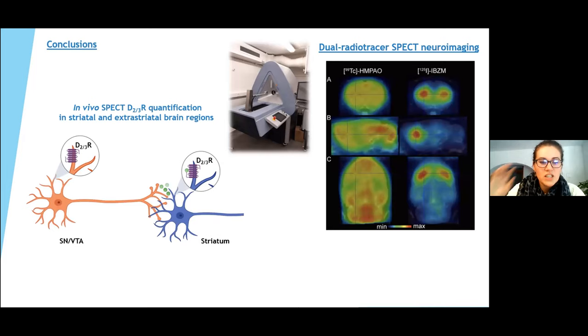The simultaneous imaging of the neurotransmitter systems is possible and will provide a better understanding of physiological or pathological mechanisms. This approach is, of course, not limited only to dopaminergic but potentially to all the systems that can be imaged in SPECT.